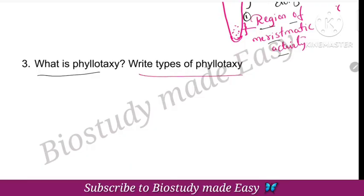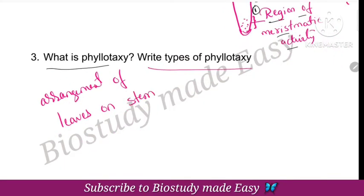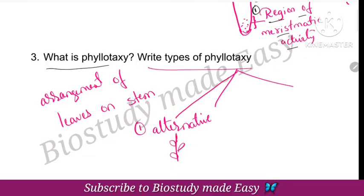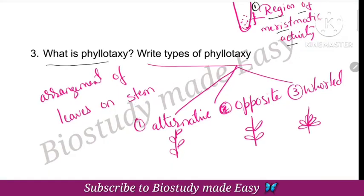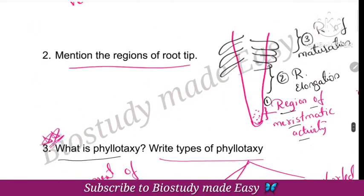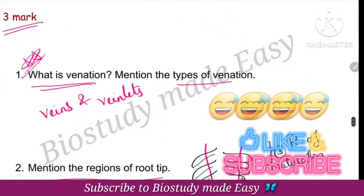Next, what is phyllotaxy and write the types of phyllotaxy — very important. Phyllotaxy is the arrangement of leaves on the stem. There are three types: alternative phyllotaxy, opposite phyllotaxy, and whorled phyllotaxy.